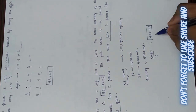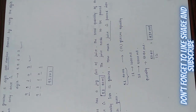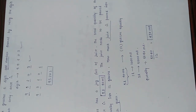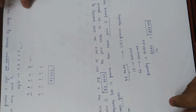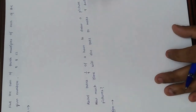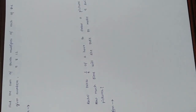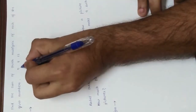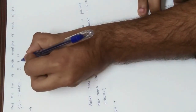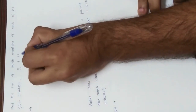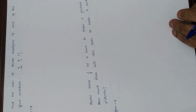5040 divided by 12 gives us 420 ml of juice in each glass. So 420 ml of juice will be poured into each glass equally. Let's proceed to the third question: find the sum of the fourth multiples of each of the given numbers.